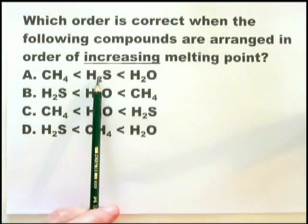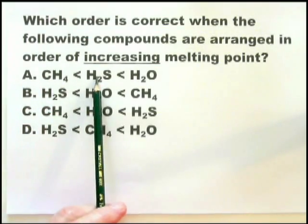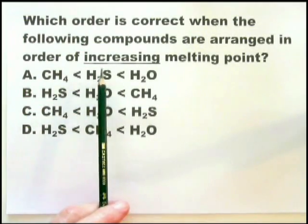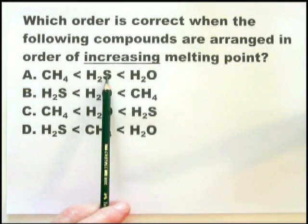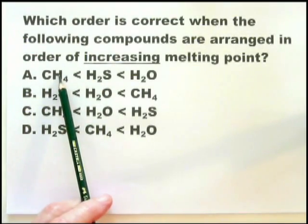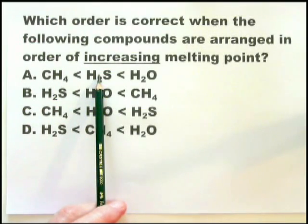The reason H₂S has a higher melting point and boiling point than methane is van der Waals forces. The size of van der Waals forces increases with increasing molecular mass. H₂S has a molecular mass of 32 + 2 = 34, whereas methane has a molecular mass of 16. Therefore H₂S will have the greater van der Waals forces holding the molecules together, so they require more energy to melt or to boil.